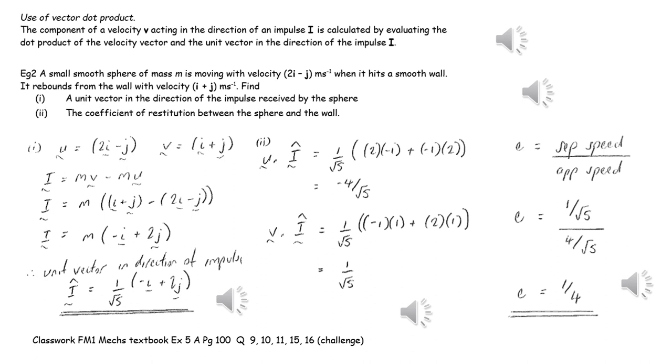Now that we know the component of the velocities in the direction of the impulse before and after the impact, we can just apply Newton's experimental law. So e is separation speed over approach speed, remembering its speed, and therefore we can use the previous answers to work out the value of e.